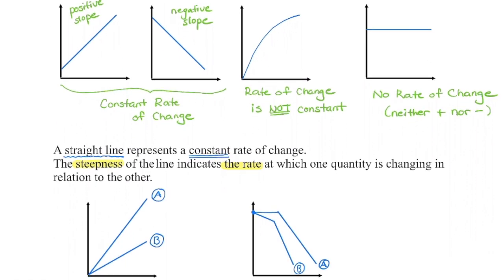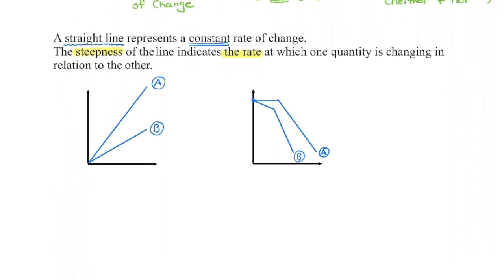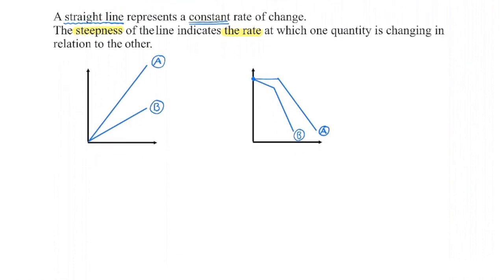It is the steepness of that line that indicates our rate of change. So I've got two more graphs here. I want you to take a look at both of these graphs. In the first case, we have two lines, A and B. One of them is rising or increasing at a faster rate than the other. I want you to figure out which one do you think has a faster rate of increase.